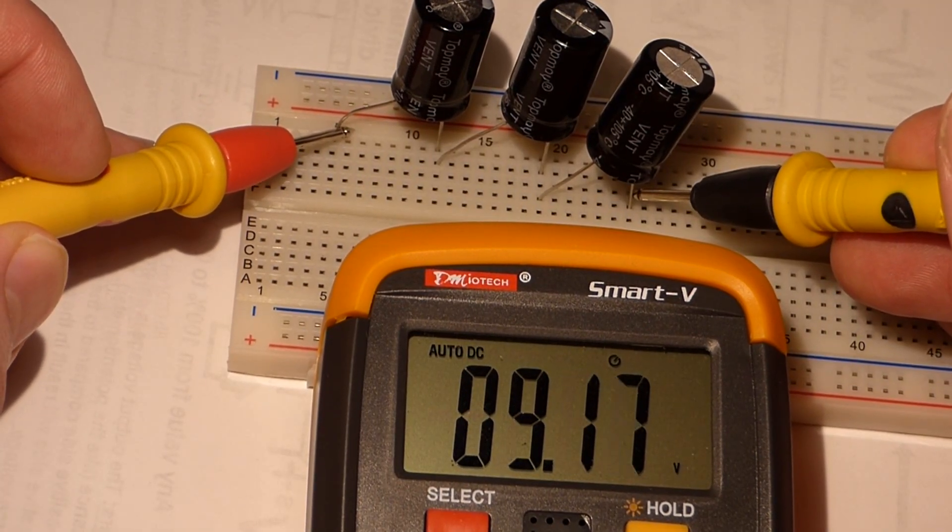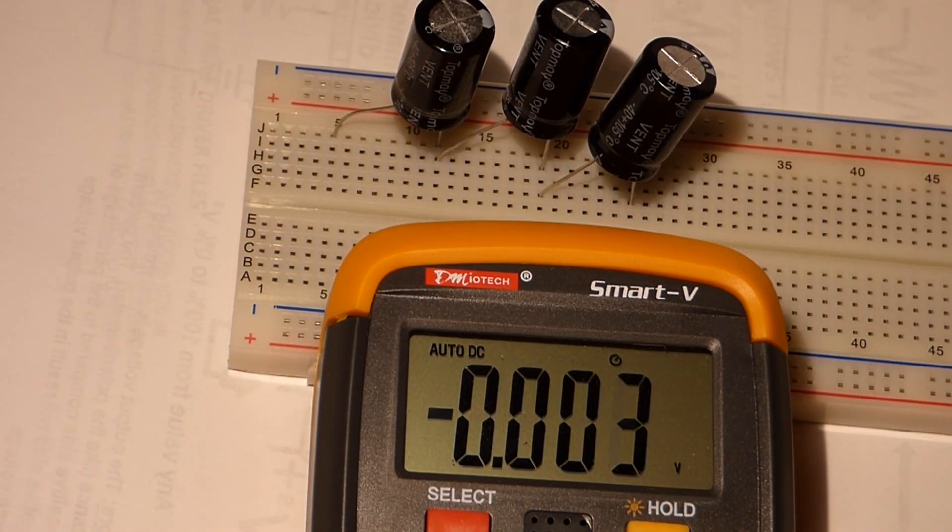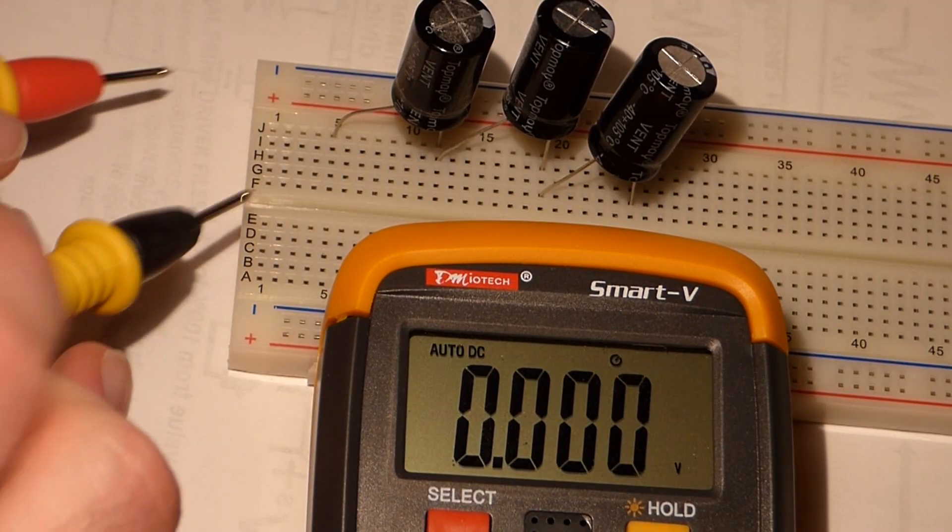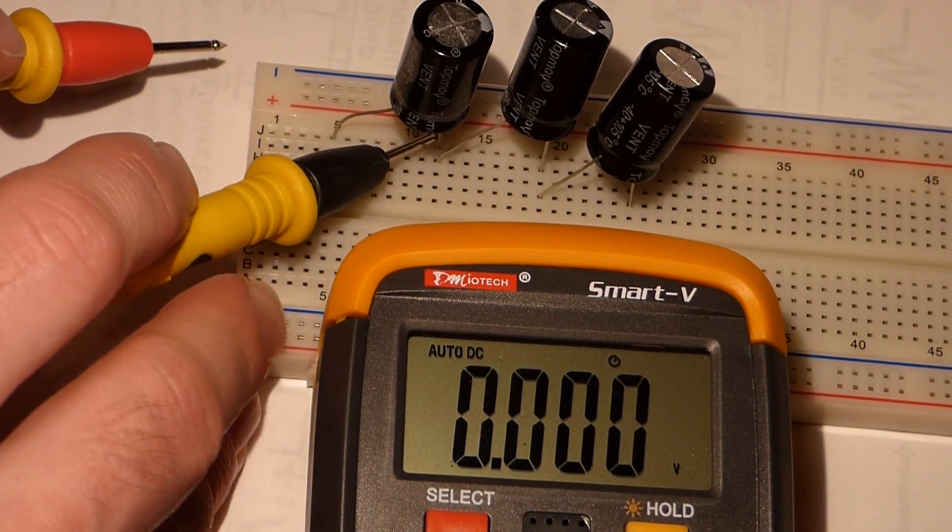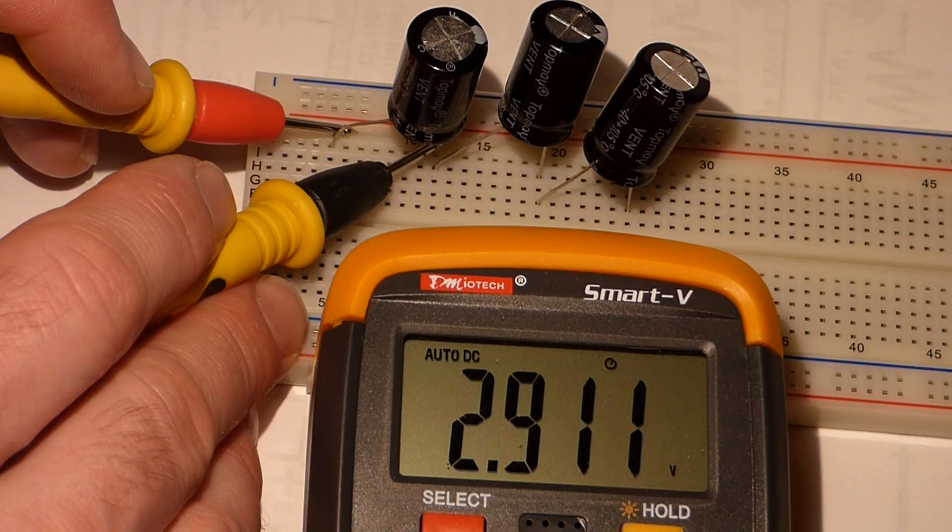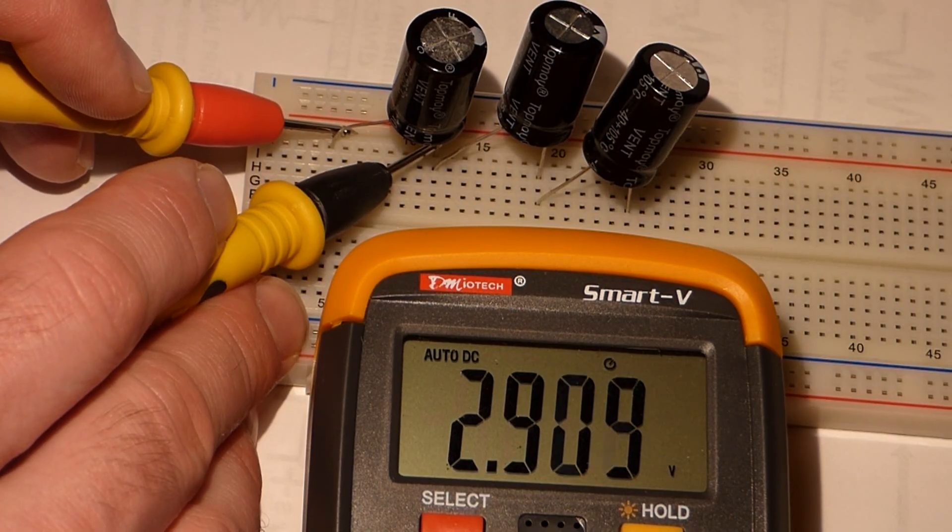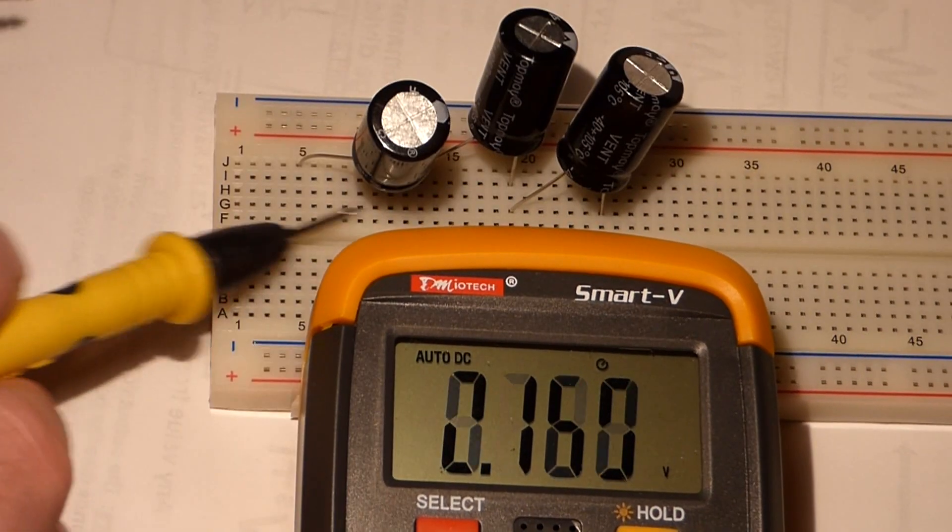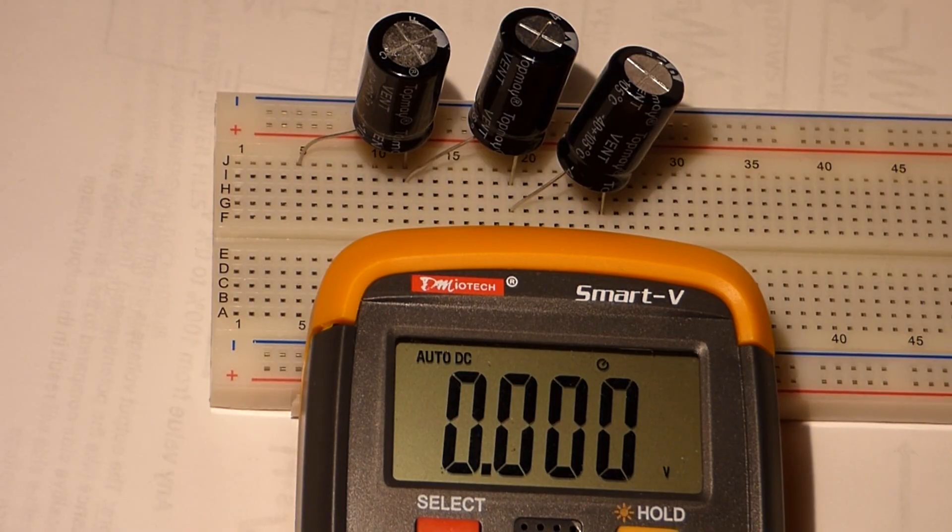So now you see it's above 9 volts. It charged up to the voltage of the battery, which was above 9. Now if I measure just this one capacitor, you see it's about 3 volts. That's a third of the total voltage from the battery.